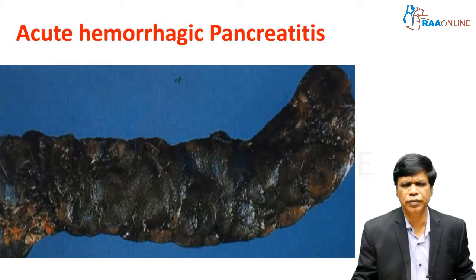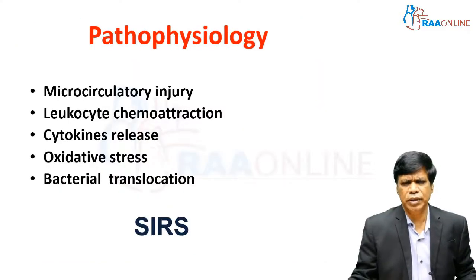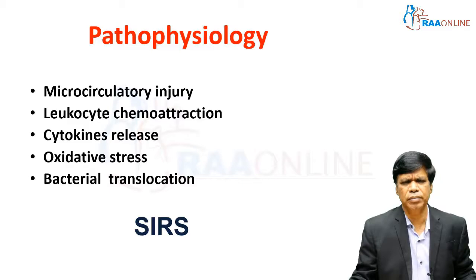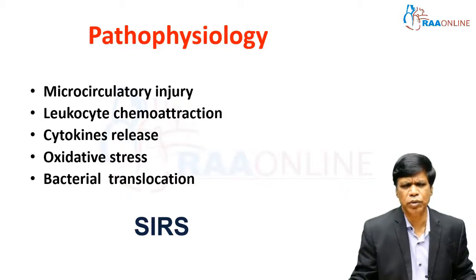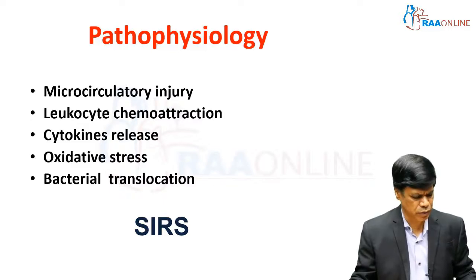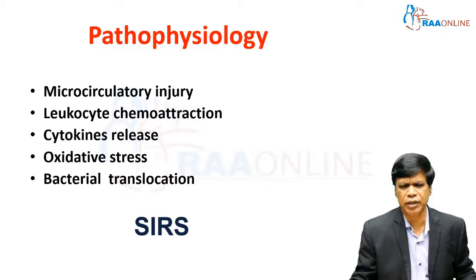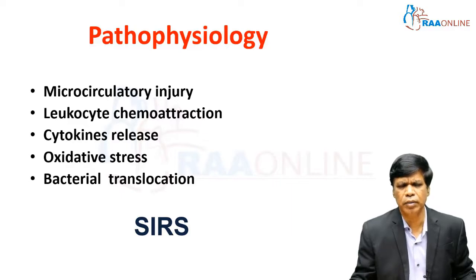This is the specimen of severe necrotic pancreatitis, also called hemorrhagic pancreatitis. At the pathophysiology level, there is initial microcirculatory injury at the capillary level, which leads to leukocyte chemoattraction. Cytokines are released which are pro-inflammatory, leading to oxidative stress overwhelming the antioxidant mechanisms. This invites bacterial translocation, and this entire process leads to severe inflammatory response syndrome — it is a sterile necrosis of the pancreas.